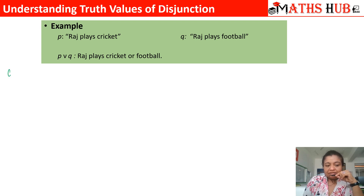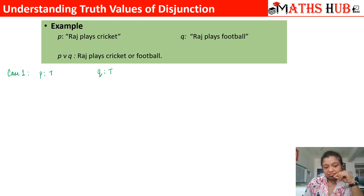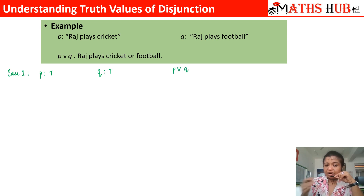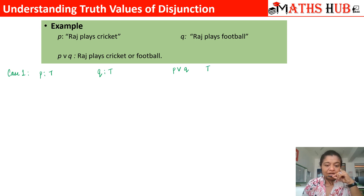Case number 1: P is a true statement, meaning Raj is playing cricket, and Q is also a true statement, meaning Raj plays football. Our argument was P or Q — either he plays cricket or he plays football. We are taking any one of them, so this is automatically going to be a true statement.